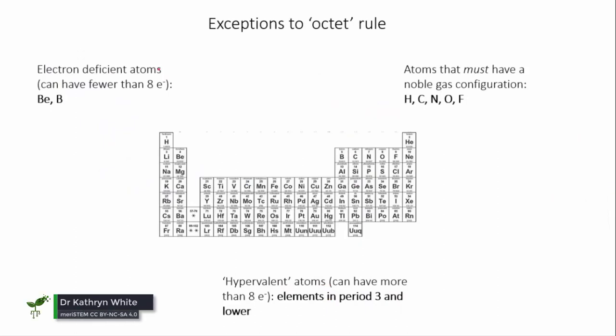So I'm just going to run through the exceptions again to remind you. We had the electron deficient atoms which are beryllium and boron.